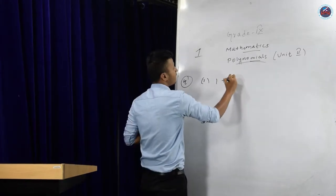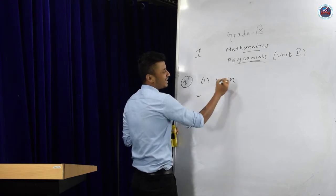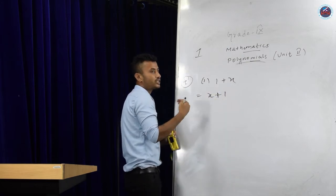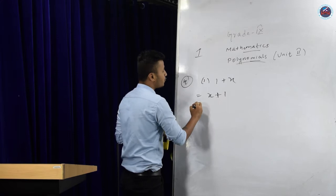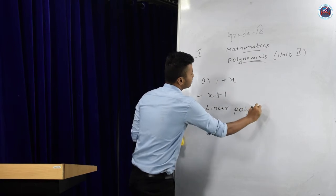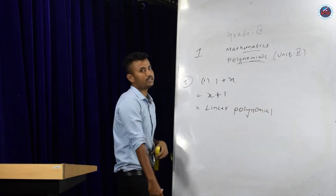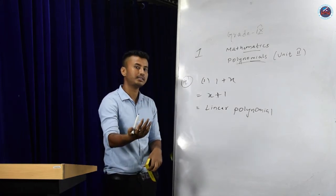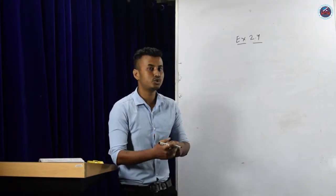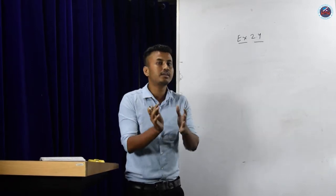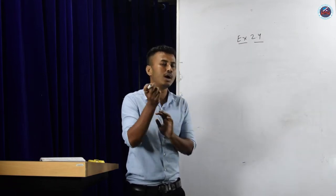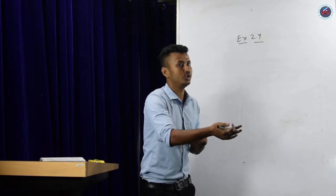The last expression is 1 plus x. Rearranging: x plus 1. The highest power of x is 1, so this is an example of a linear polynomial. I hope your first exercise is clear. Let's proceed to exercise 2.4 by understanding some basic concepts — we are going to find out whether a certain polynomial is a factor of another polynomial.